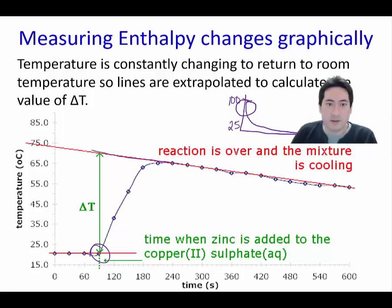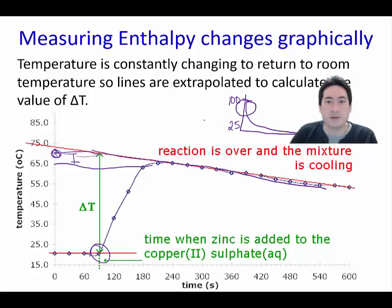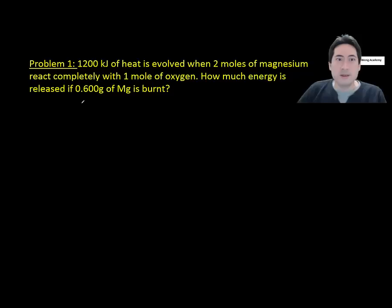To account for the cooling curve, draw a line of best fit, then identify when the substances were added together. Draw a straight line across from that point — the vertical distance to the curve represents the true temperature increase, correcting for the heat lost to the surroundings during the reaction. This is how you calculate the true temperature rise.